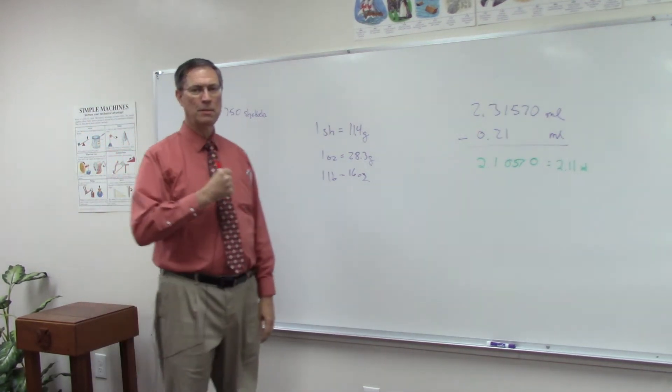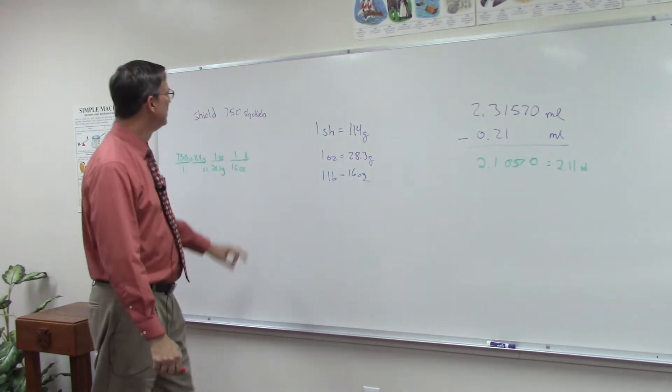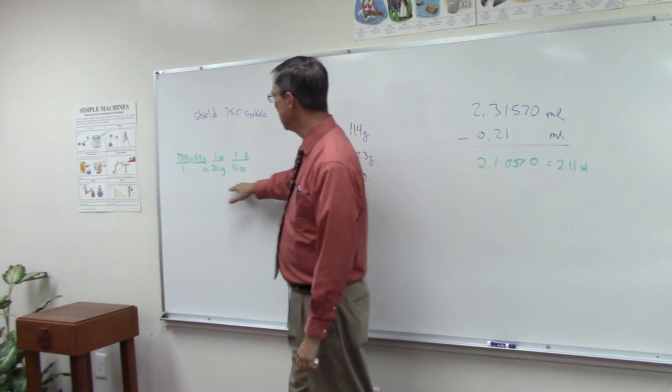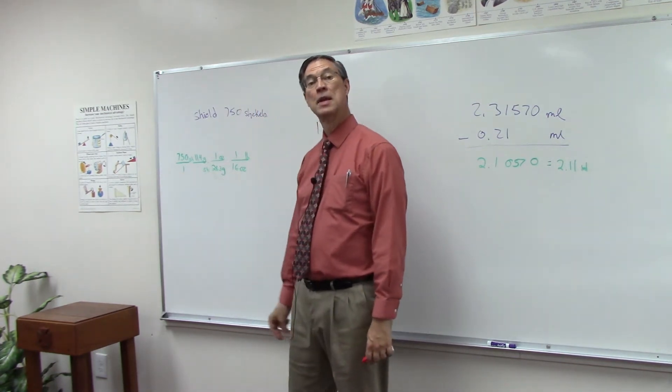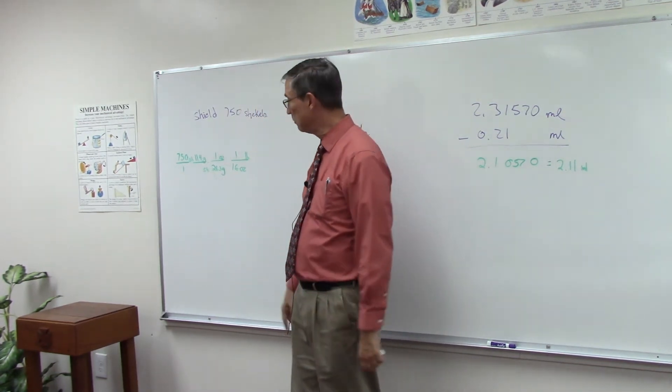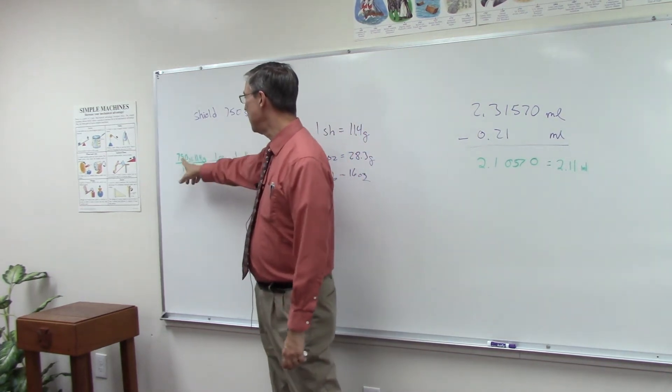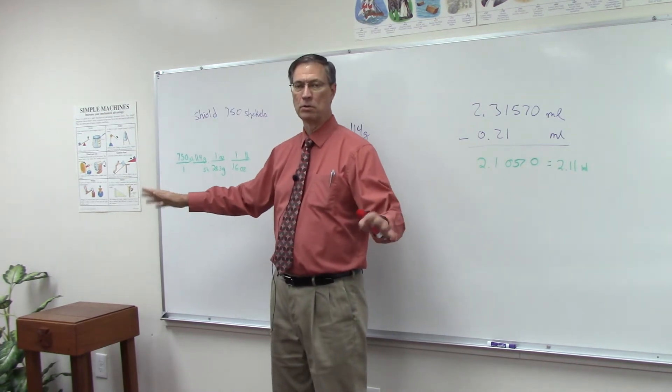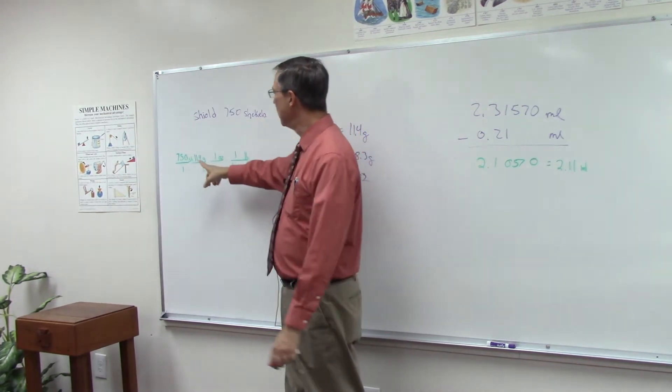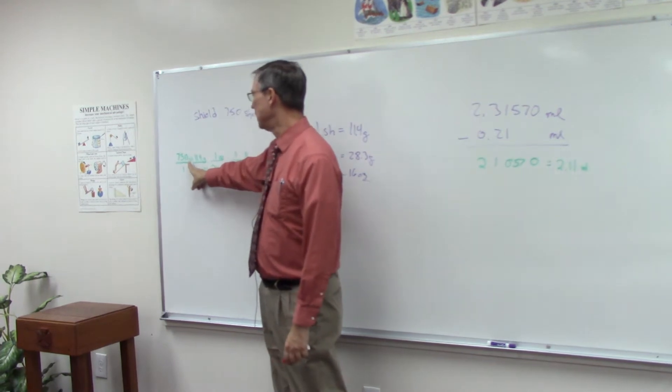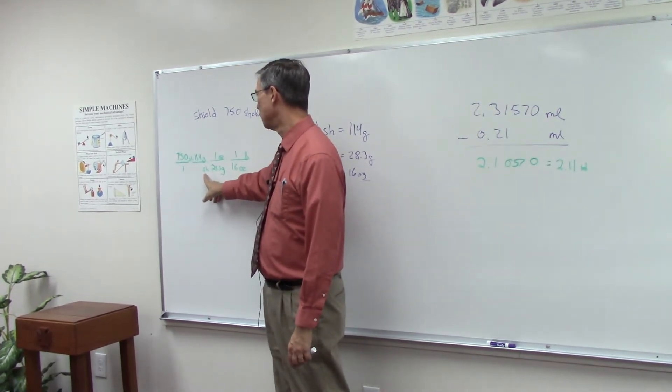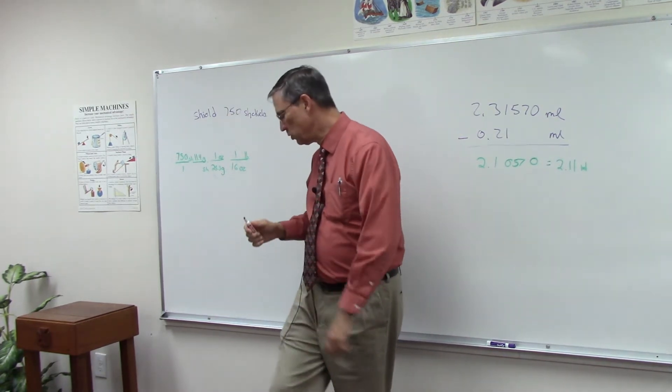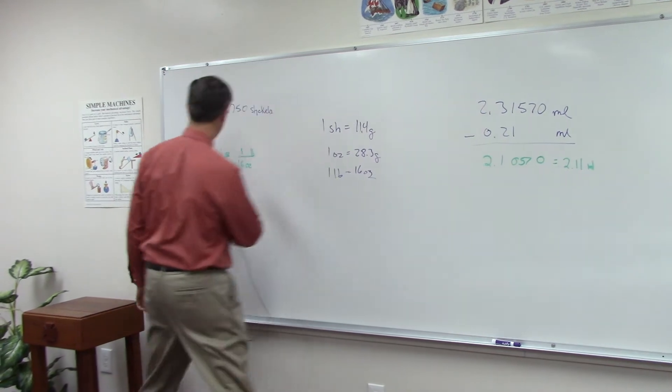Let's say one of Solomon's shields is 750 shekels. This is how we set up the conversion factors, and we did this earlier in the pace. Whatever they give you, you put that on the top, and we just put it over one. I call it a pedestal. We're just trying to get it up into the numerator. Then whatever units were given, we put that on the bottom.